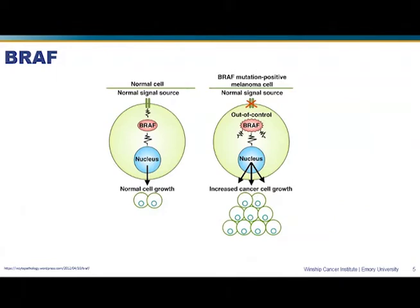This diagram explains what the gene does. In a normal cell, a signal comes from the outside and gets transmitted into the cell. BRAF normally helps send signals down to the nucleus, and those signals help control cell growth — resulting in normal, expected cell growth. But in a BRAF mutation-positive melanoma cell, BRAF is abnormal, so abnormal signals get sent to the center of the cell, and you often have an increase in cancer cell growth, which you don't want — abnormal cells growing uncontrollably.